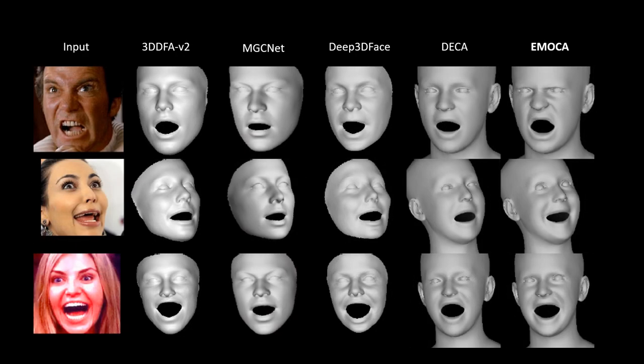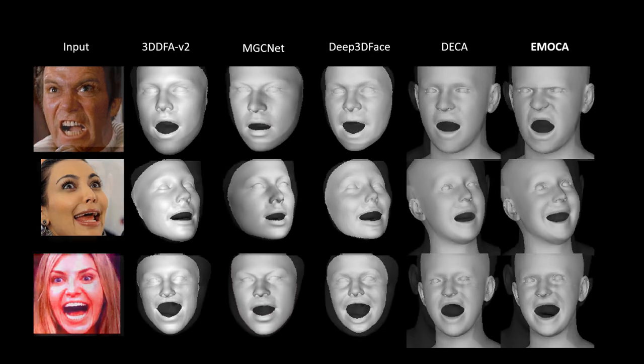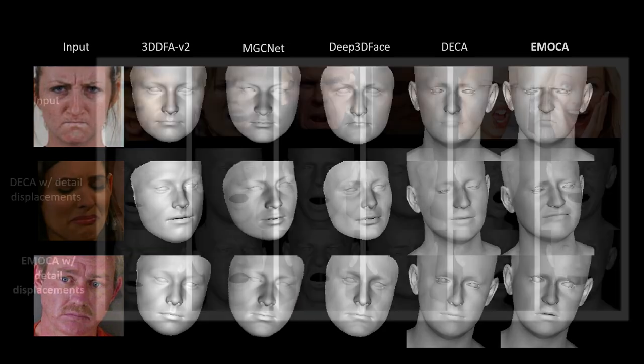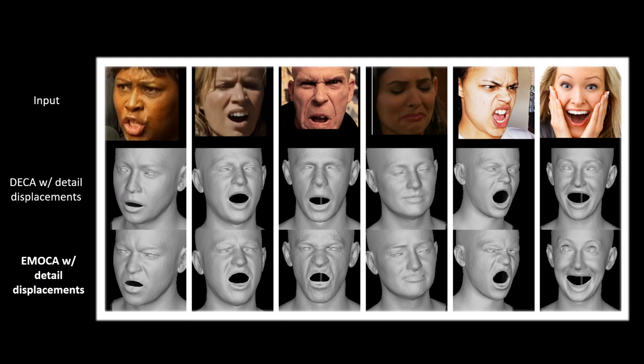Our coarse shape, however, better reconstructs the facial expressions of the input image. Our method significantly outperforms existing methods in terms of the quality of the reconstructed expression and the perceived emotional content. Furthermore, EMOKA predicts high-resolution displacement maps producing detailed shapes that capture emotion-dependent wrinkles.